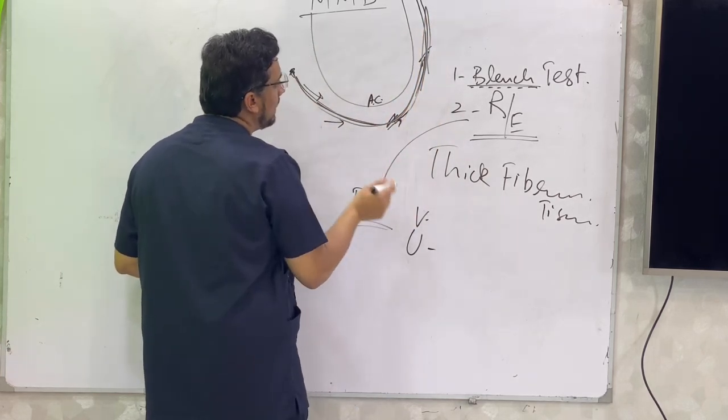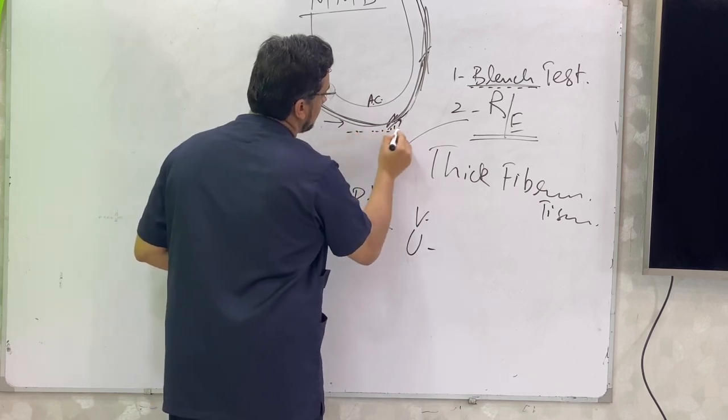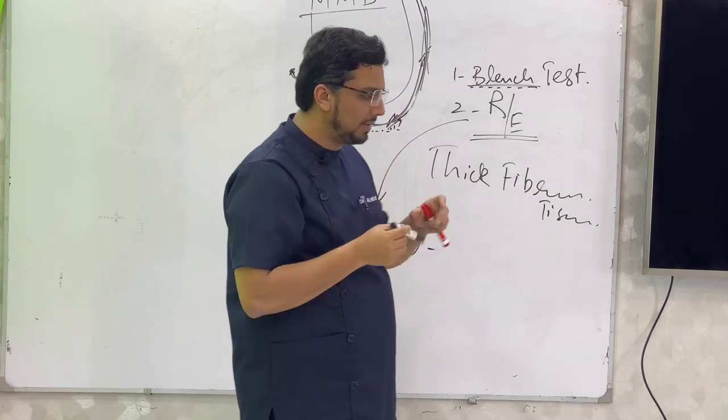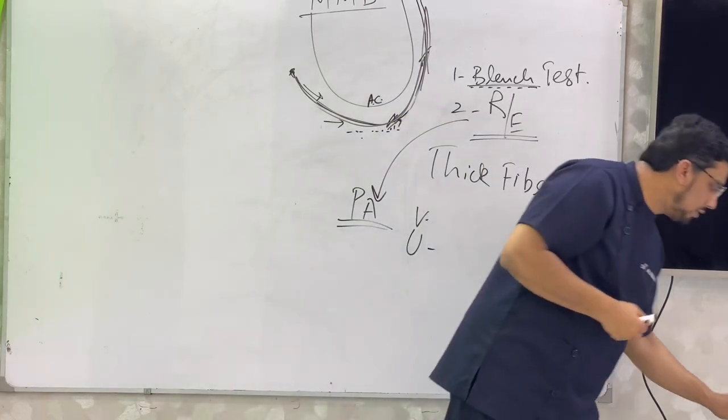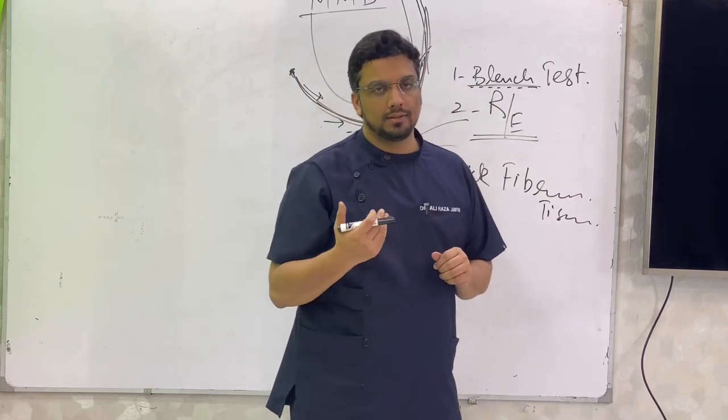So what happens, the bone keeps on growing on the adjacent areas but not into the area of, not above or over the labial frenum.